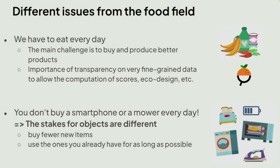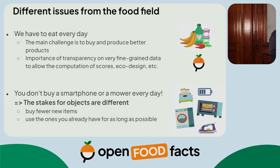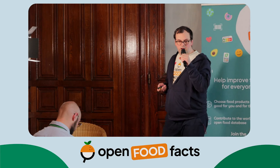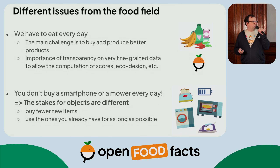It's also a different issue from the food barcode scanning for food. Basically, we have to eat every day, so we have to make split decision choices about food. You don't buy a smartphone or a mower every day, so you buy fewer items and possibly have some choices to make. But it's also about ensuring the product is maintained well, that you can repair it, that you can use the products you already have for as long as possible.